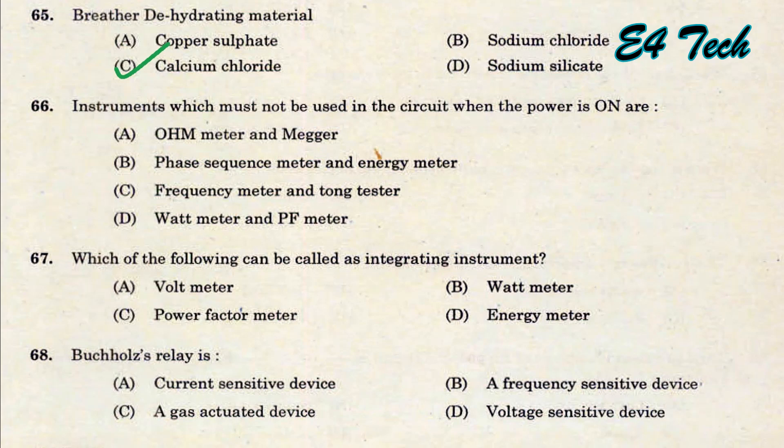The instrument which must not be used in the circuit when the power is ON — it should never be used when the supply is on. Therefore option A: ohmmeter and megger.